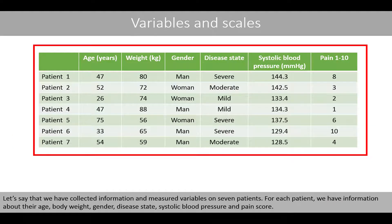Let's say that we have collected information and measured variables on seven patients. For each patient, we have information about their age, body weight, gender, disease state, systolic blood pressure, and pain score.